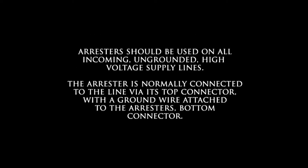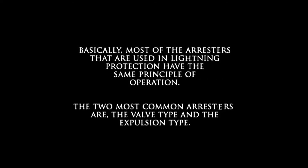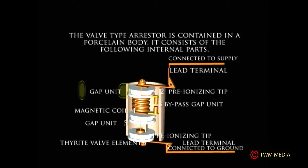Arrestors should be used on incoming, ungrounded, high voltage supply lines. The arrestor is normally connected to the line via its top connector, with a ground wire attached to the arrestor's bottom connection. Most arrestors used in lightning protection have the same principle of operation. The two most common arrestors are the valve type and the expulsion type. The valve type arrestor is contained in a porcelain body and consists of the following internal parts: the lead terminal connected to the supply, the gap unit and pre-ionizing tip, the magnetic coil and bypass gap unit, the gap unit and ionizing unit.